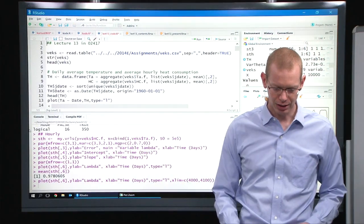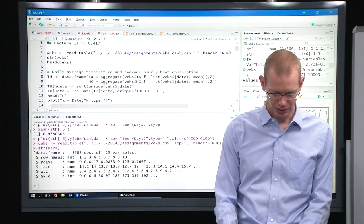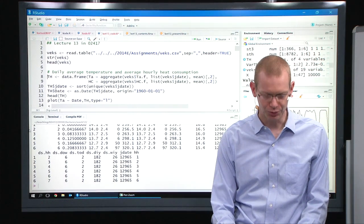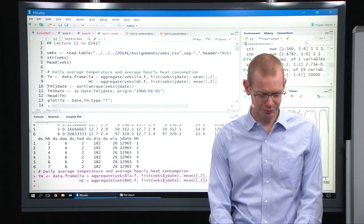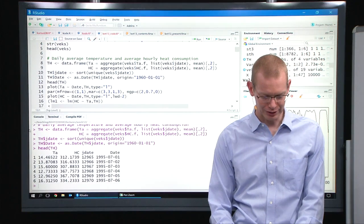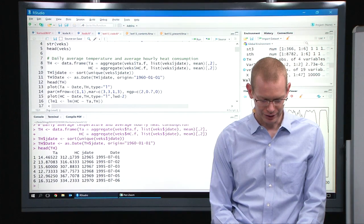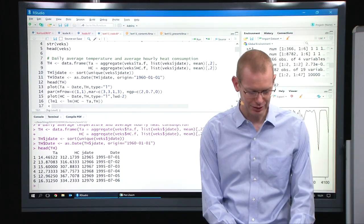So let's go back to R and look at this data again. I'll share what is needed here with you later on, but let's just go through to find the dates. So now we have the temperatures and the heat consumption, the Julian date and what is the actual date.